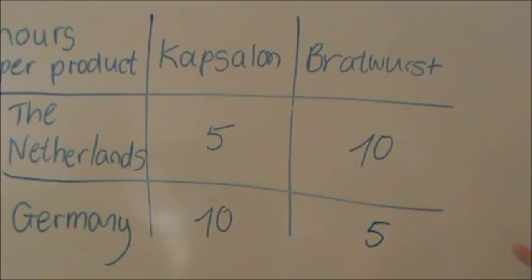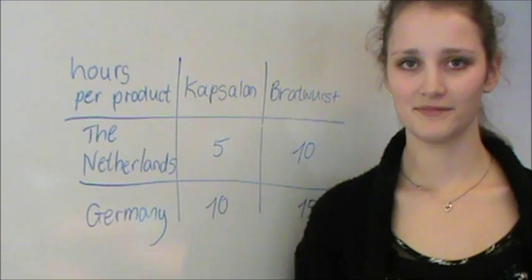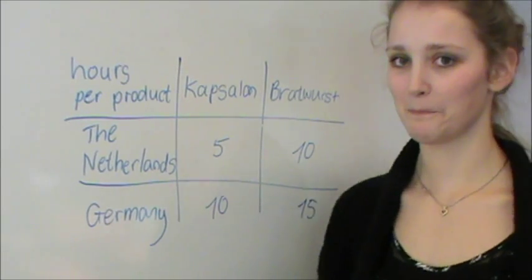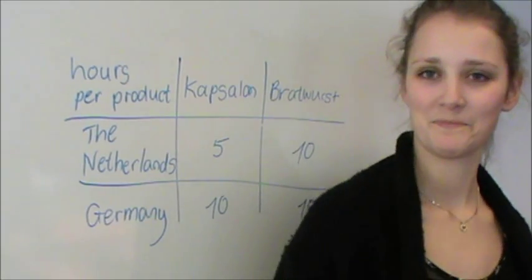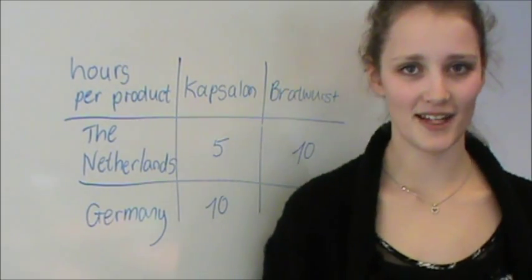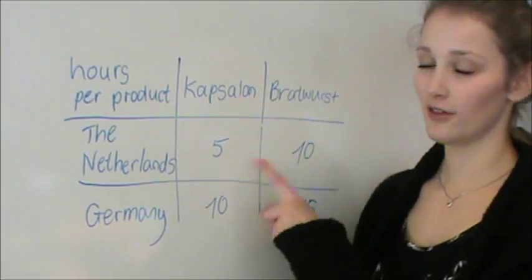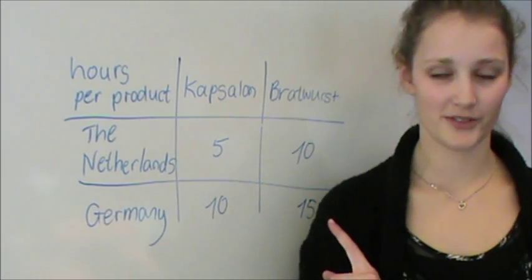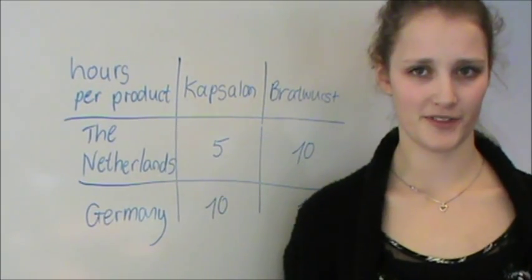We talk of a comparative advantage when one country has an advantage in producing all the products. What is the other country then going to do? In this new situation we can see that the Netherlands is better at making both capsulons and bratwurst. But what should Germany produce then?